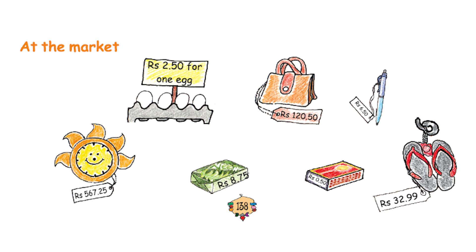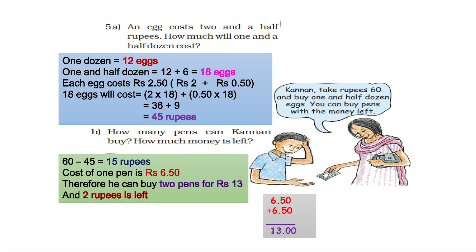The next question: an egg costs 2.5 rupees. How much will one and a half dozen cost? Two and a half rupees means rupees 2.50 and one dozen is equal to 12 eggs, so one and a half dozen means 12 plus 6 which is equal to 18 eggs. Let us split rupees 2.50 into rupees 2 and rupees 0.50. Calculating at rupees 2 per egg, 18 eggs will cost rupees 36. And calculating at 50 paise per egg, 18 eggs will cost rupees 9. So the total cost will be 45 rupees.